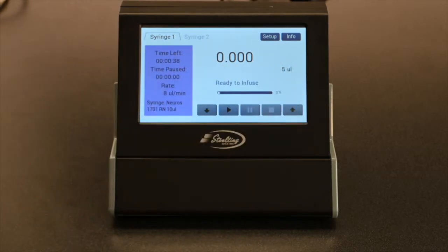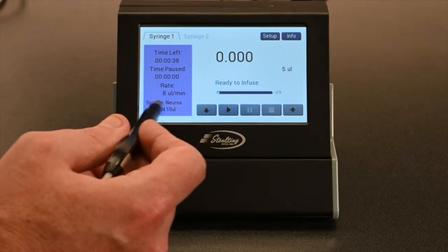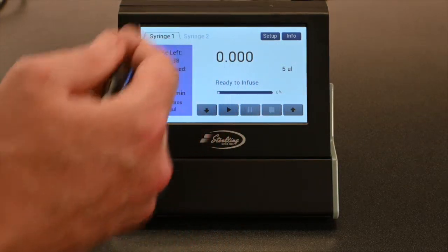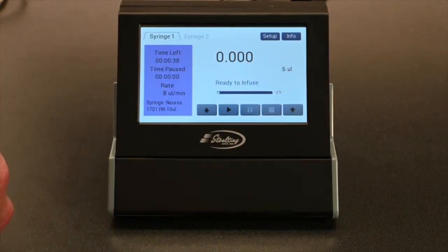This was the volume we selected over here on the right. This is the syringe we selected. So you can see everything that you've selected on the setup screen right here and make any corrections that you might need to make.